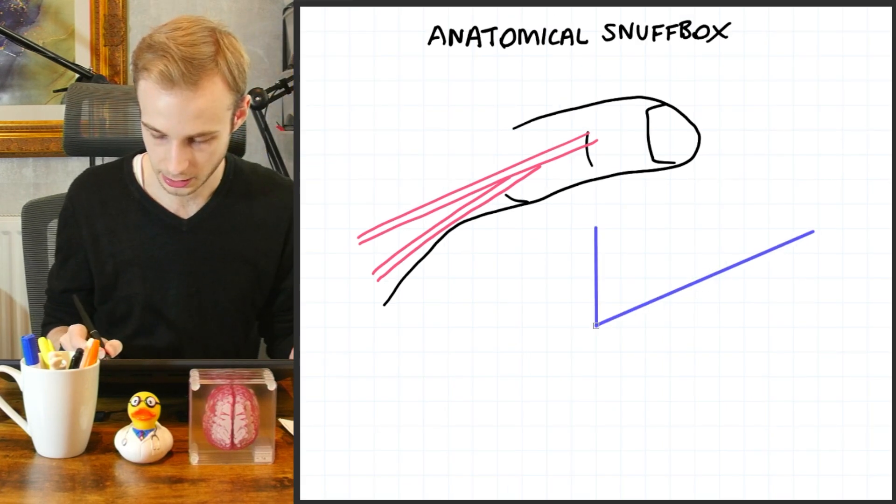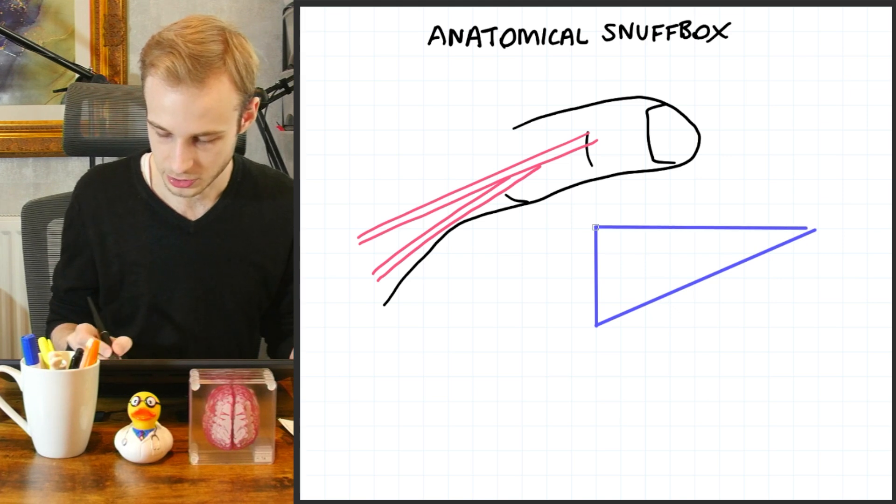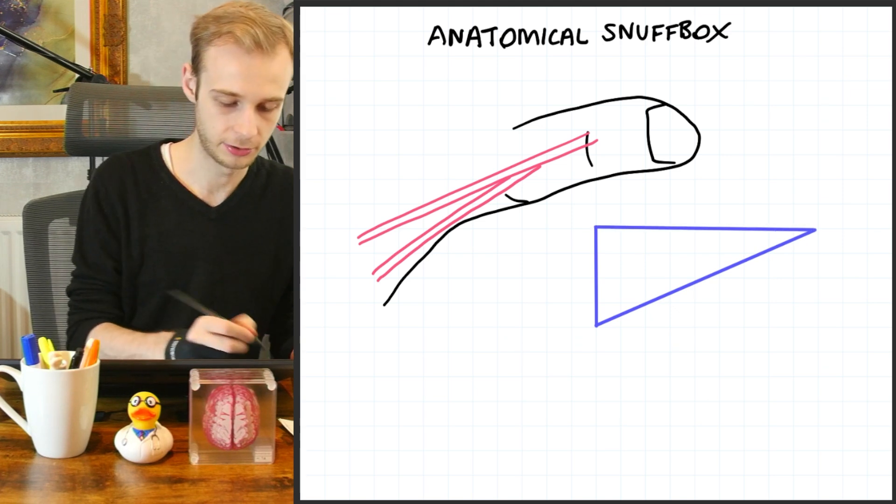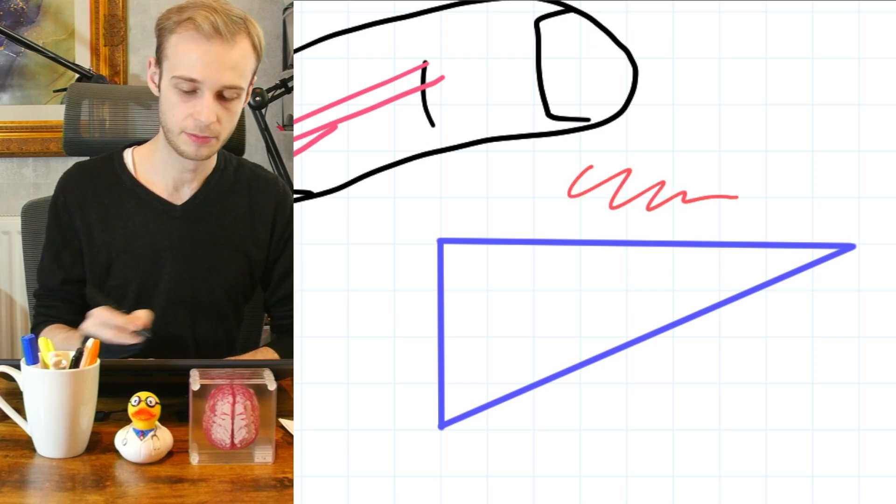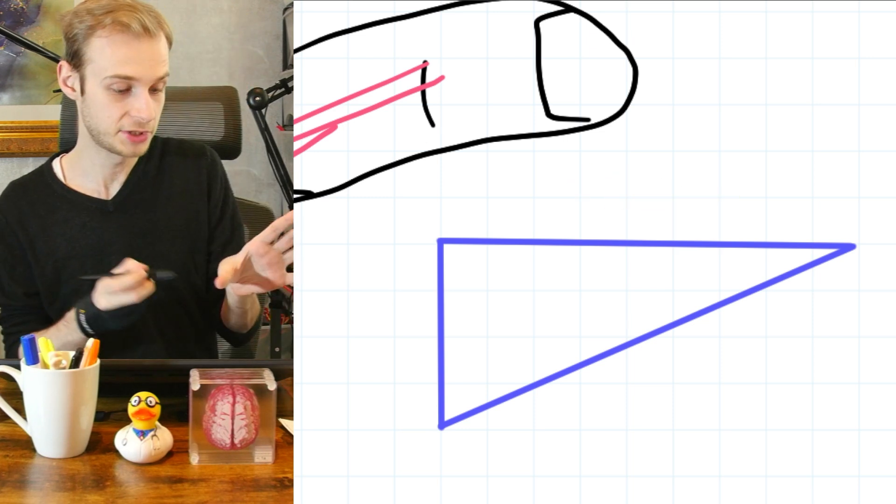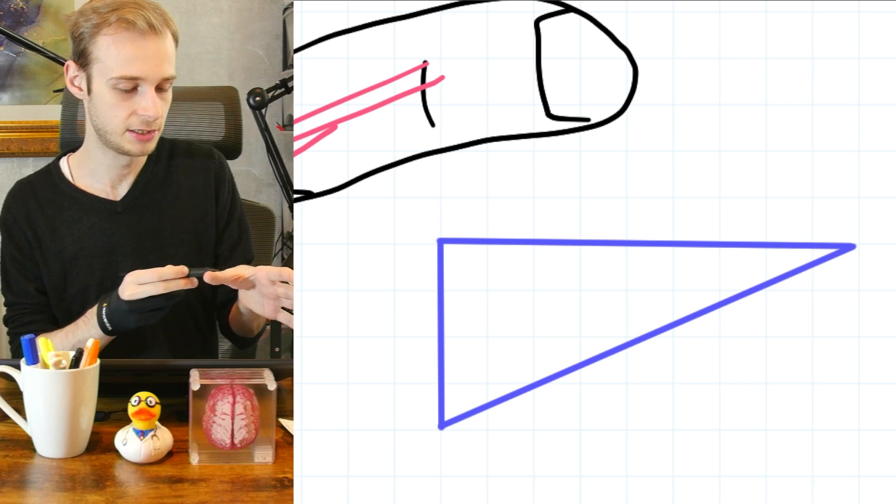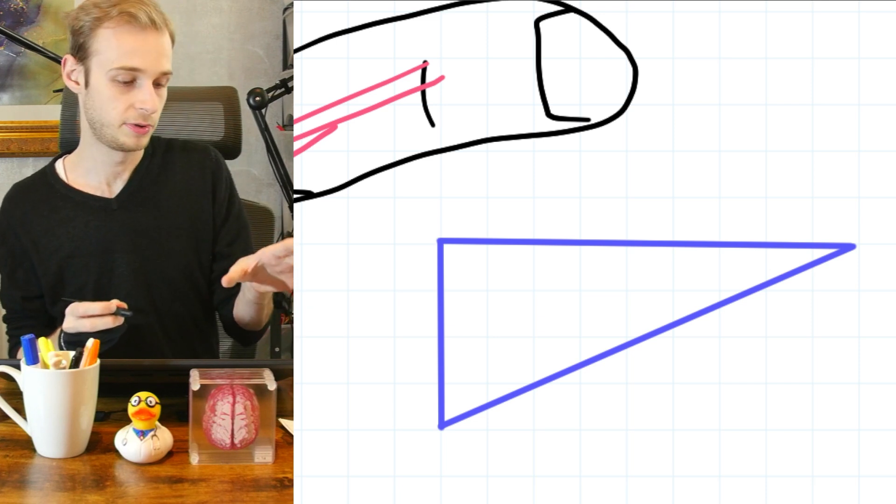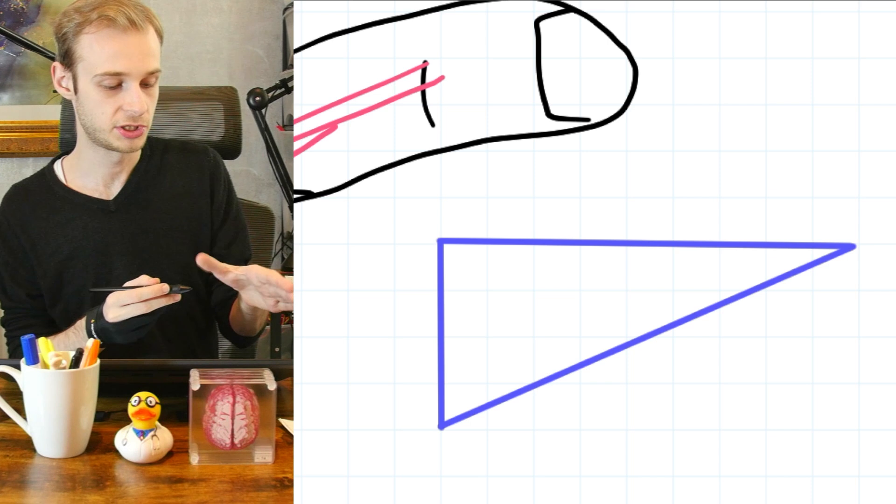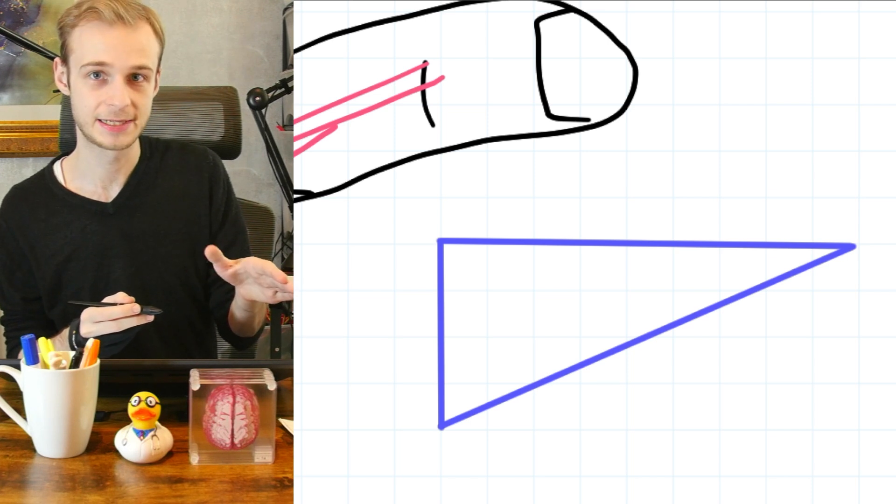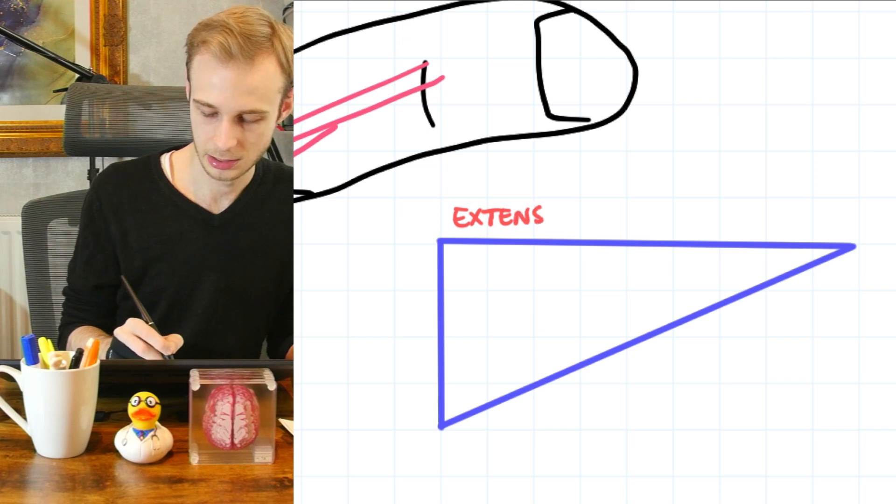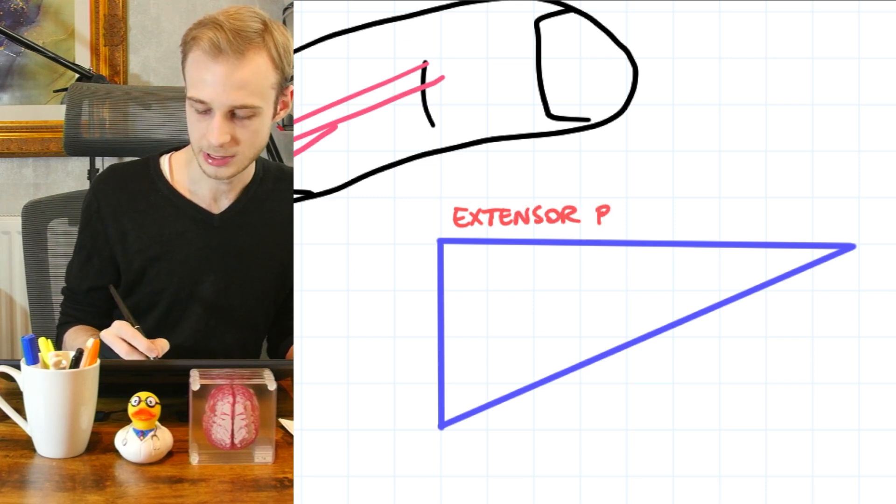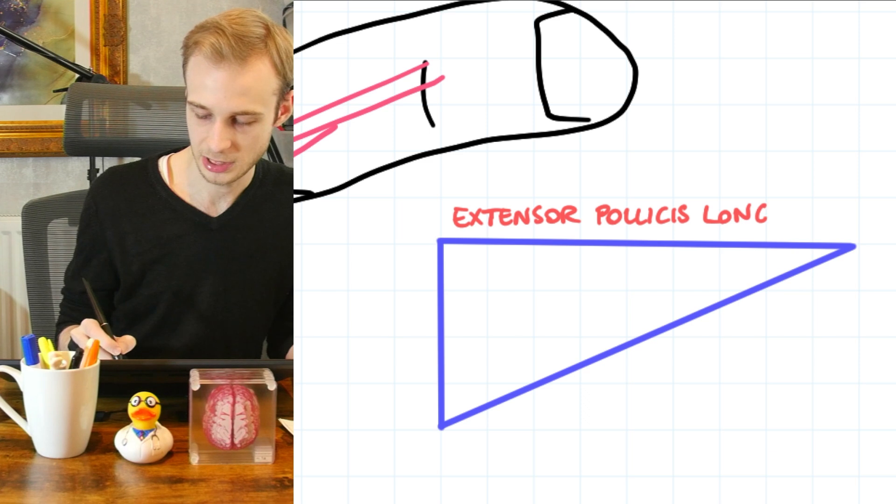So now what we're going to do is we're going to start labeling up some of the structures that make up our triangle. So the first of these structures that we're going to label is the superior border here, which again, if we just look at our hand, we have a tendon running superiorly up the middle of our thumb, which comes to the surface when we extend. And this first muscle is called extensor pollicis longus or EPL.